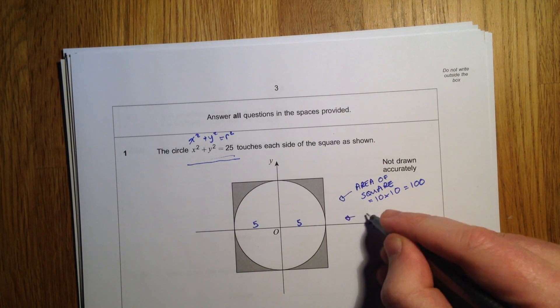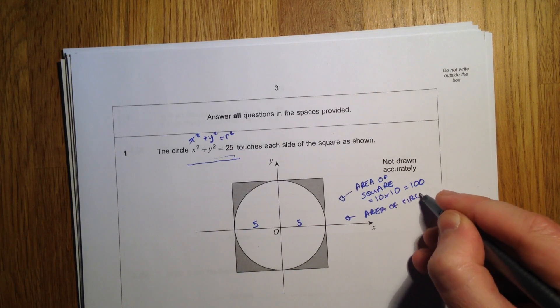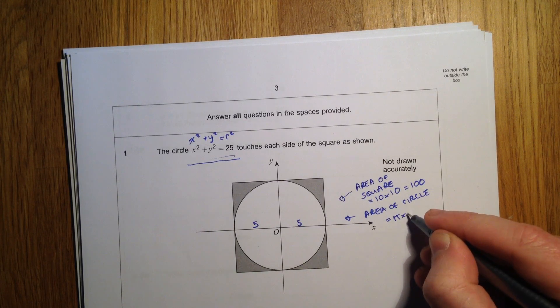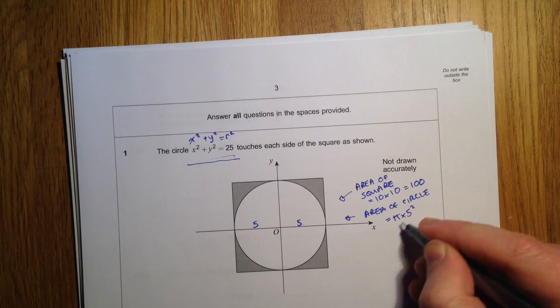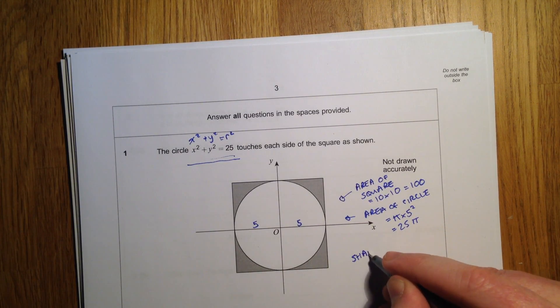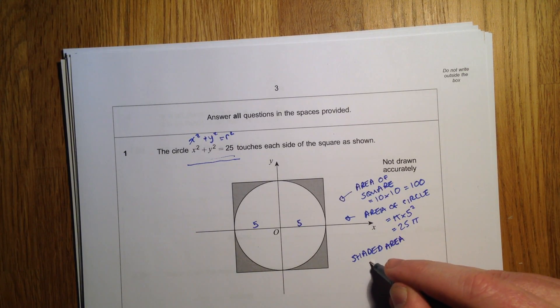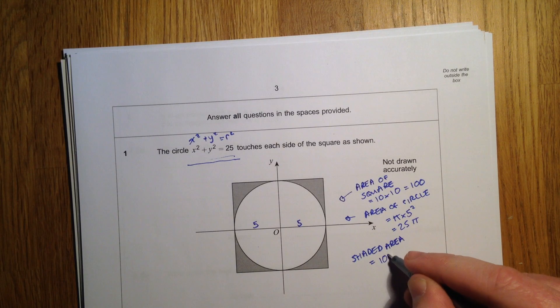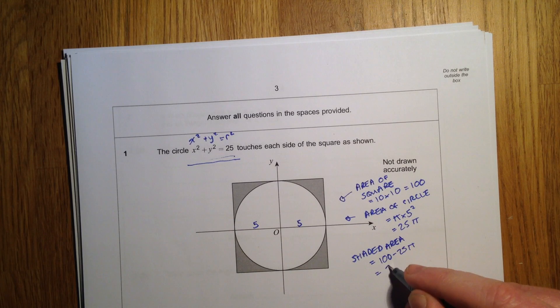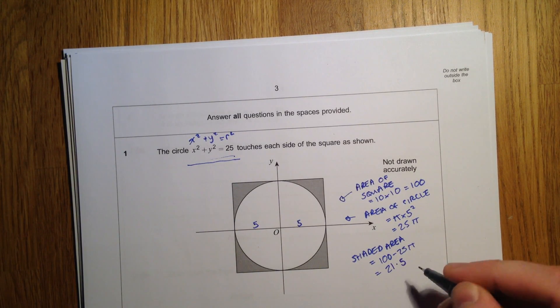The area of the circle is pi r squared, so pi times 5 squared which is 25 pi. So the shaded area is the square take away the circle, so 100 take away 25 pi, which comes out as 21.5 square units.